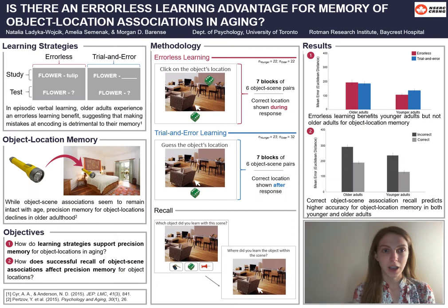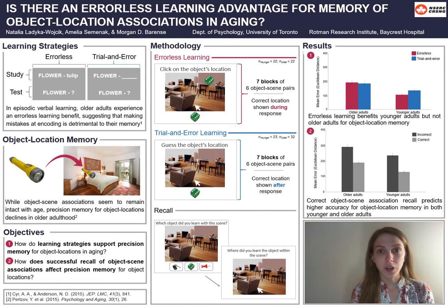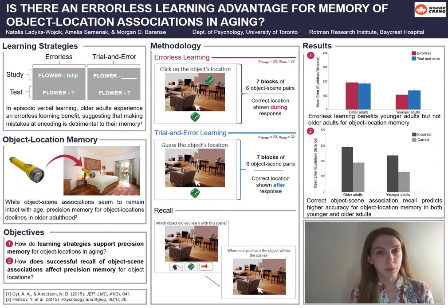So first of all, what do I mean by learning strategies? In this experiment, we compared errorless learning with trial and error learning. In traditional episodic word pair memory tasks, participants in an errorless learning condition are provided with a cue, such as 'flower,' and the correct answer to that cue, here the word 'tulip.' In a trial and error learning condition, participants must generate a guess for each keyword provided at encoding. They are then given feedback with the correct response. After learning a list of these word pairs in both conditions, participants are typically tested on their recall for the target word in each pair.